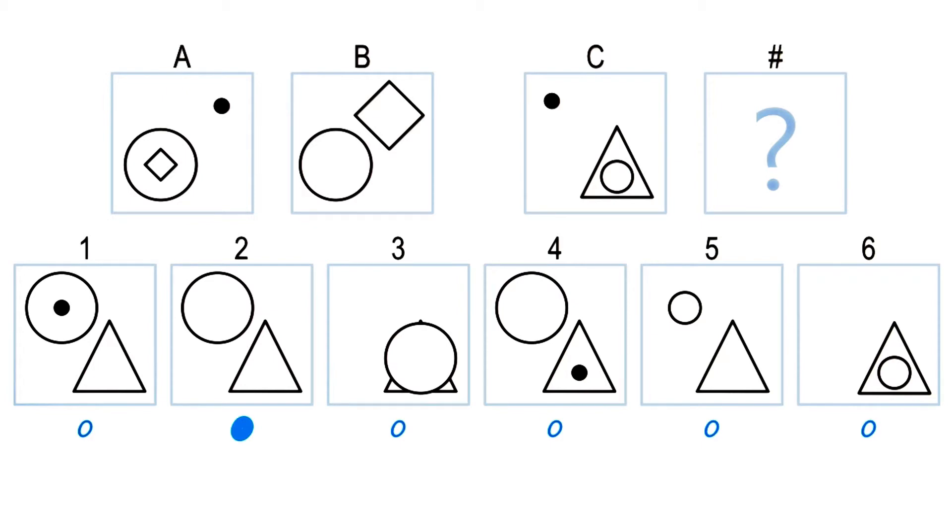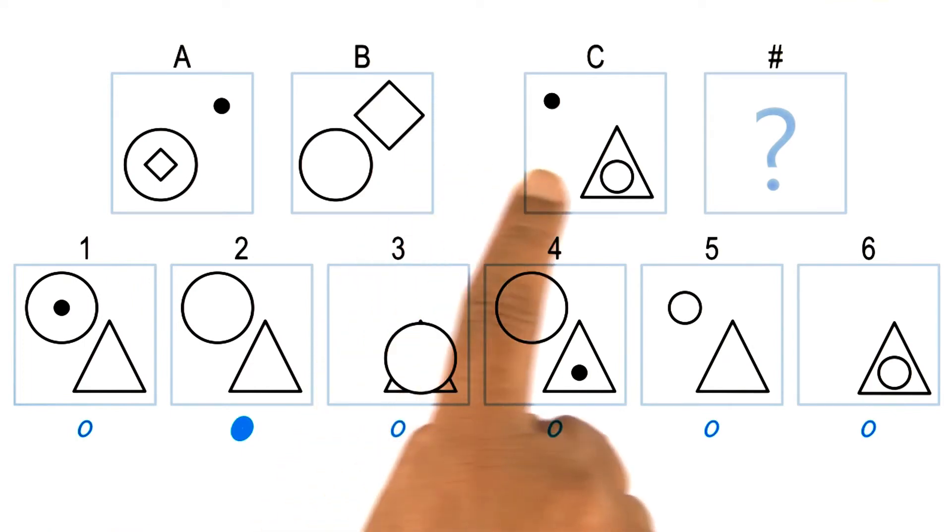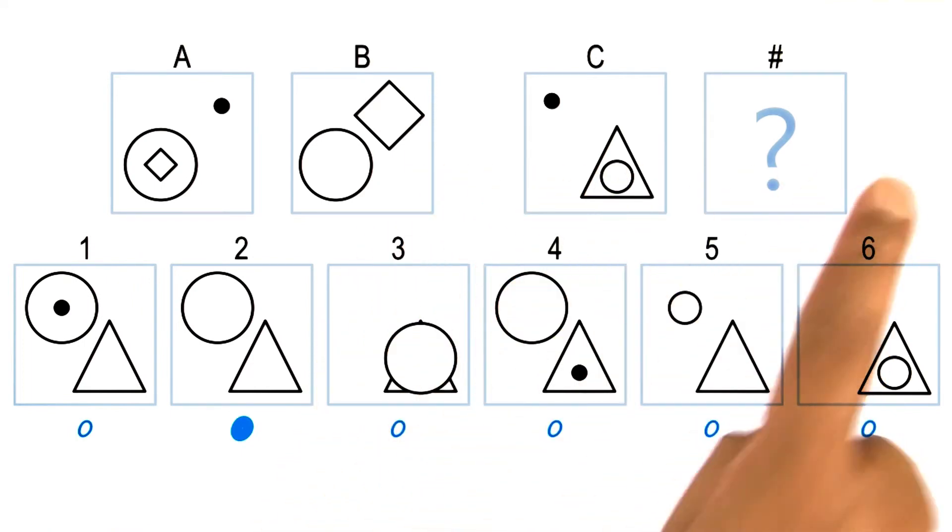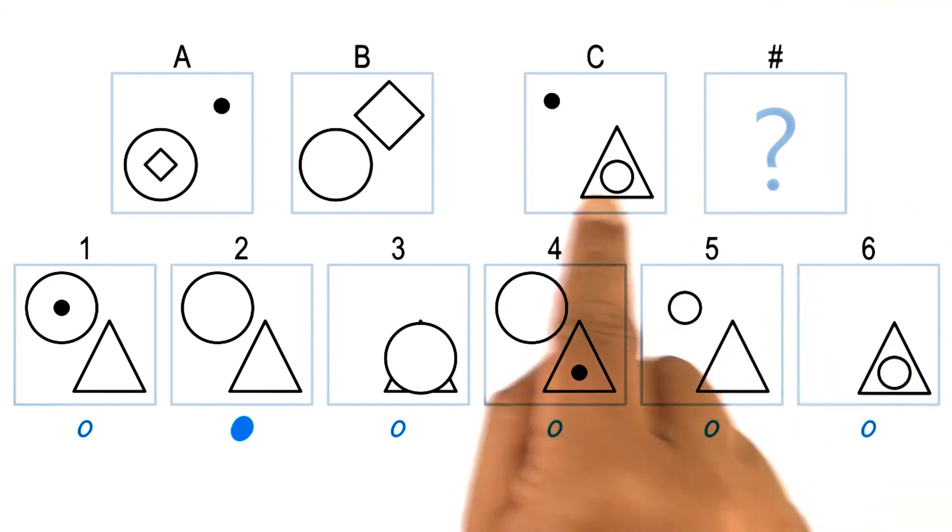Yet another question. When David was trying to solve this problem, he looked at the relationship between A and B, and then mapped it to C and some image here. But one could have gone about it the other way. One could have picked any one of these images, put it in D, and ask whether it will be a good fit.